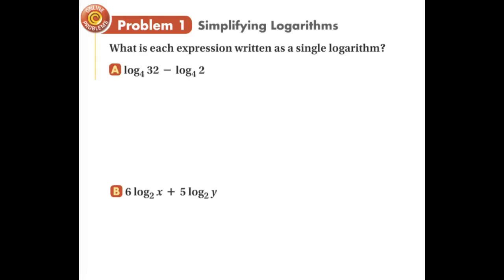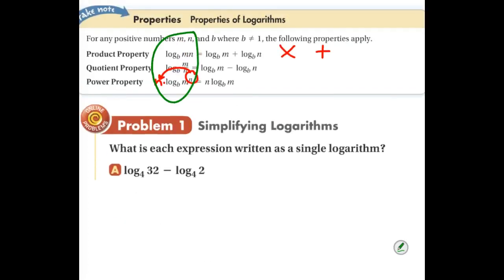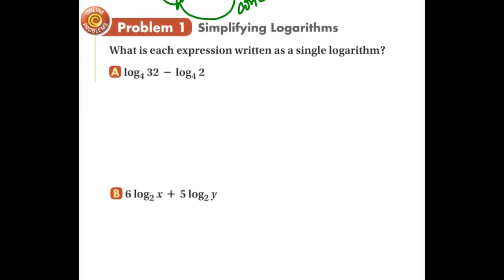It works both directions. So if we have it written in product, quotient, or power form, we can expand it. If we're going to condense, we go from the expanded form back to a single log. The two sides are equal, so we can go back and forth. The first set of examples asks what each expression written as a single log is — that means we're condensing. We want it down to just one log. Your bases have to be the same, and for our examples they always will be. To use these properties to expand and condense, you have to have the same base.